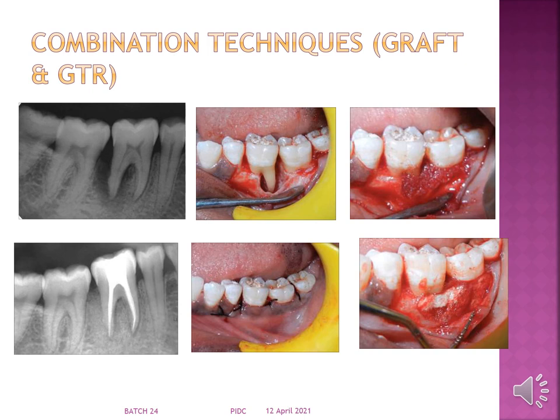A combination technique can also be used where a graft and a GTR membrane are applied together. Here you can see a bone defect where a graft has been applied and a GTR membrane placed over it. After closure, the bone gain achieved following treatment is clearly visible.